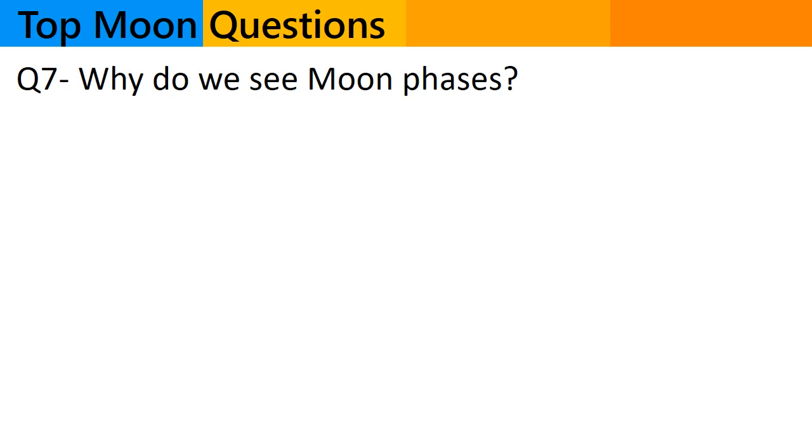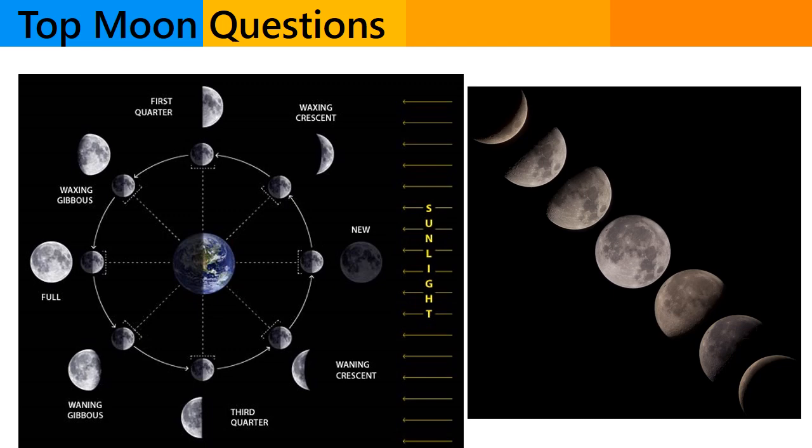Question number 7. Why do we see moon phases? We see moon phases because of the changing position of the moon, earth and sun relative to each other. The moon does not emit light of its own, it reflects sunlight.